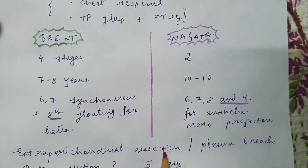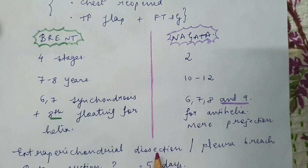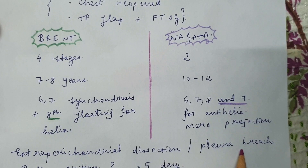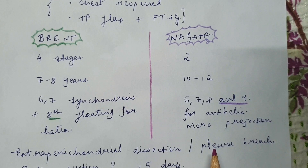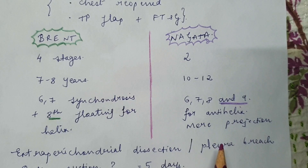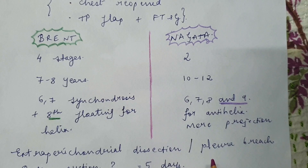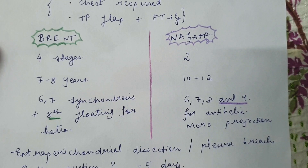There can be a pleural breach during harvesting. In that case you repair it by inserting an ICD and repairing the layers. As you complete a purse-string closure and pull out the ICD, the anesthetist gives positive pressure ventilation, which helps close the breach and you repair the pleura. These are all important viva questions.